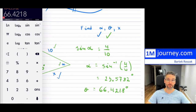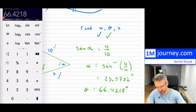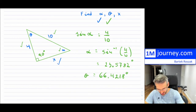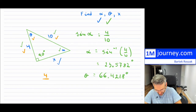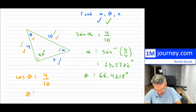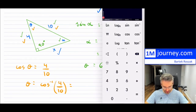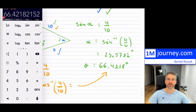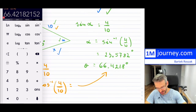If your teacher says to use trig ratios instead, we can certainly do that. For this theta, we have the adjacent side of 4 and the hypotenuse of 10, so cosine of theta equals 4 over 10. Using cosine inverse of 0.4, we get exactly the same answer — both methods work. Use whichever one you prefer or your teacher requires. So now we have all the angles.